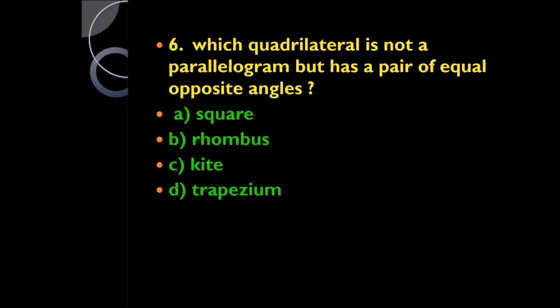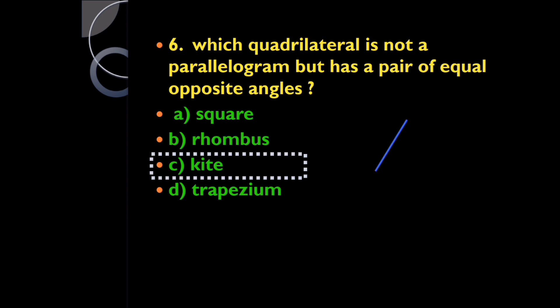Question six: which quadrilateral is not a parallelogram but has a pair of equal opposite angles? It is a kite. In a kite, two distinct pairs of adjacent sides are equal, and the angles formed by the unequal sides are equal in measure.